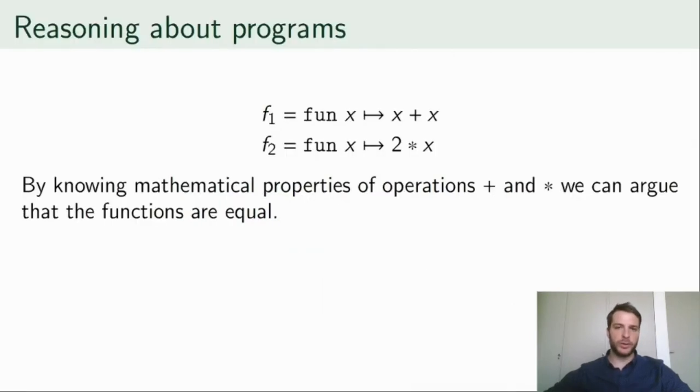When we're reasoning about programs, we often rely on certain equivalences, such as the ones stemming from mathematical properties. For instance, the functions f1 and f2 can be considered equal since x plus x is equal to 2 times x.